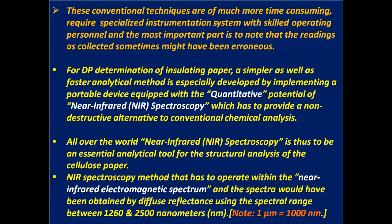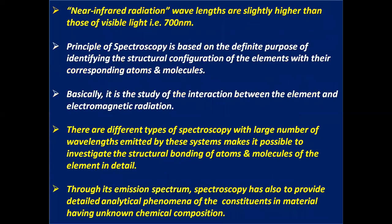All over the world, near-infrared or NIR spectroscopy is an essential analytical tool for the structural analysis of cellulose paper. The NIR spectroscopy method operates within the near-infrared electromagnetic spectrum, and the spectra are obtained by diffuse reflectance using the spectral range between 1260 to 2500 nanometers — noting that 1 micrometer equals 1000 nanometers. Near-infrared radiation wavelengths are slightly higher than those of visible light, that is, 700 nanometers.